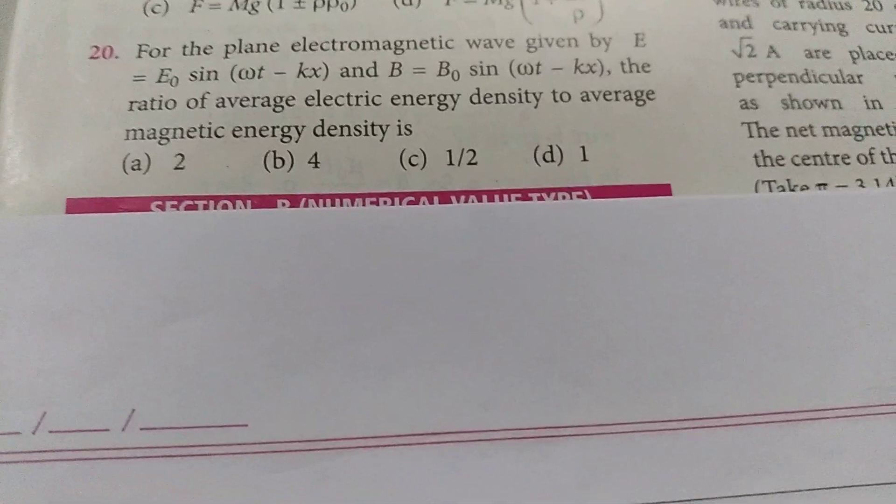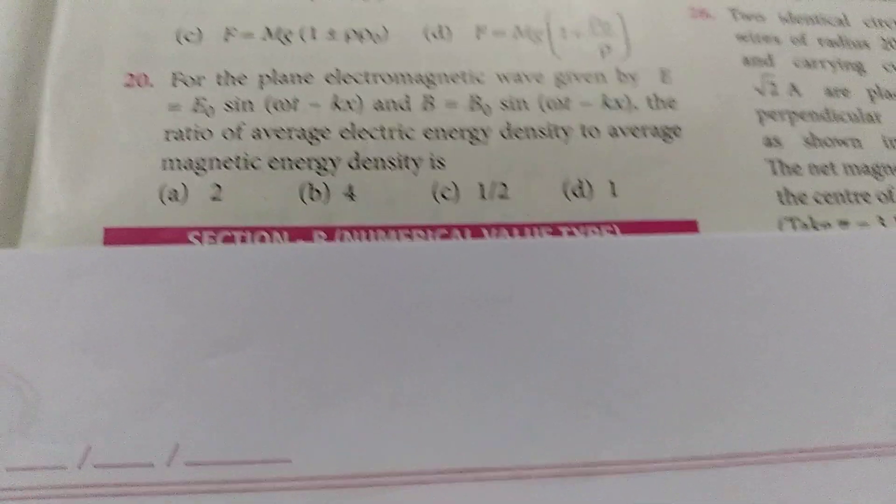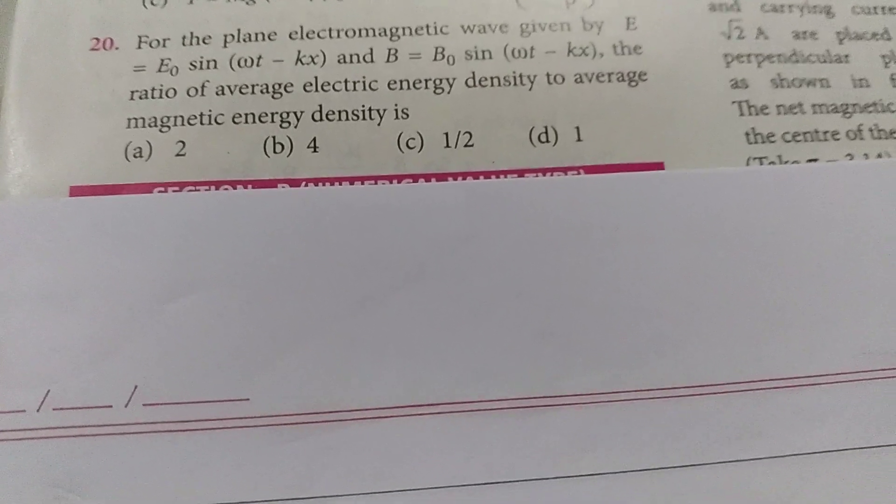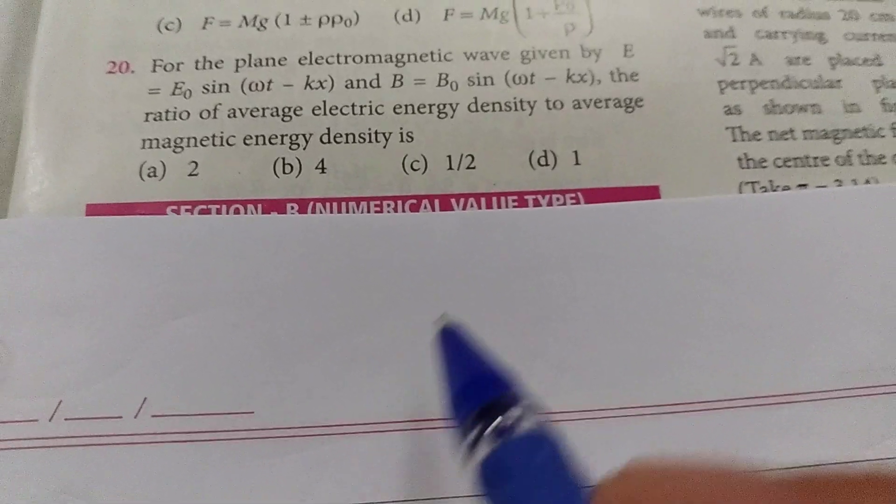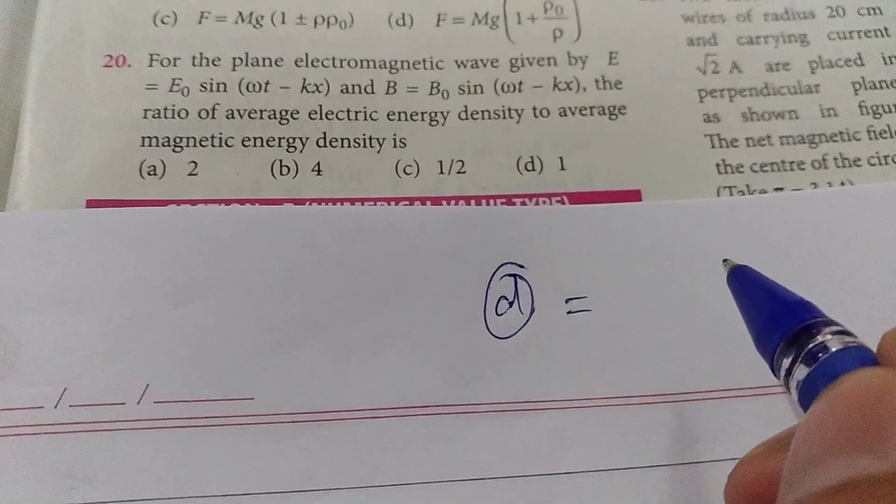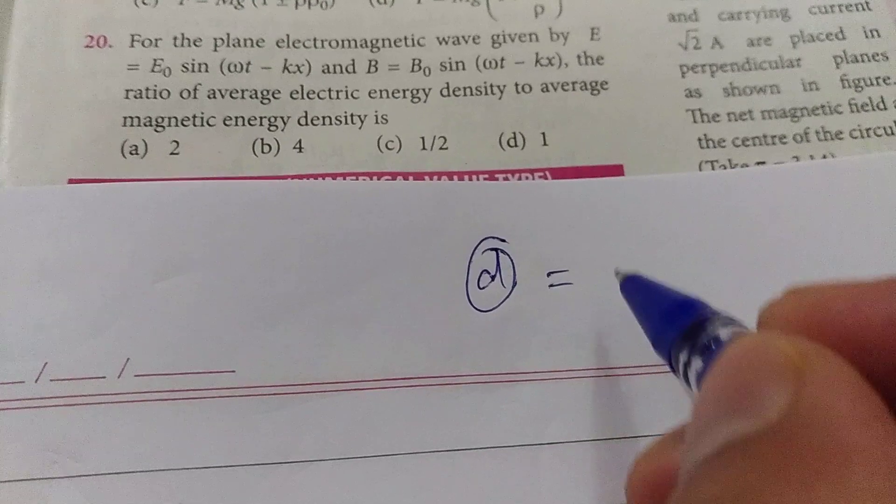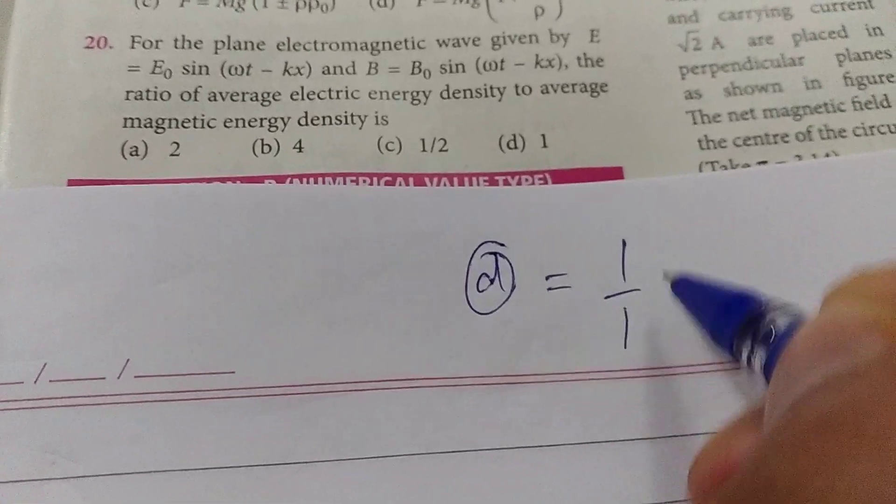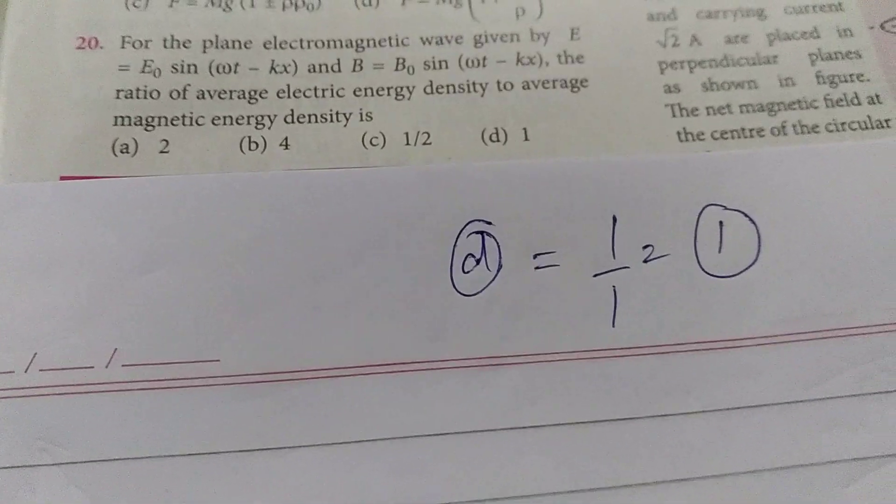So students, in electromagnetic waves, the average electric energy density and average magnetic energy density are equal. So this means that obviously the answer will be one. Because electric energy density and magnetic energy density are the same, the ratio is 1 upon 1, which means 1. So option D is the right answer.